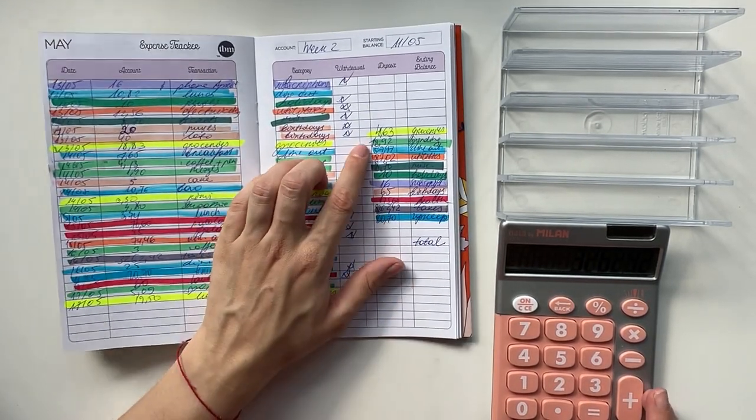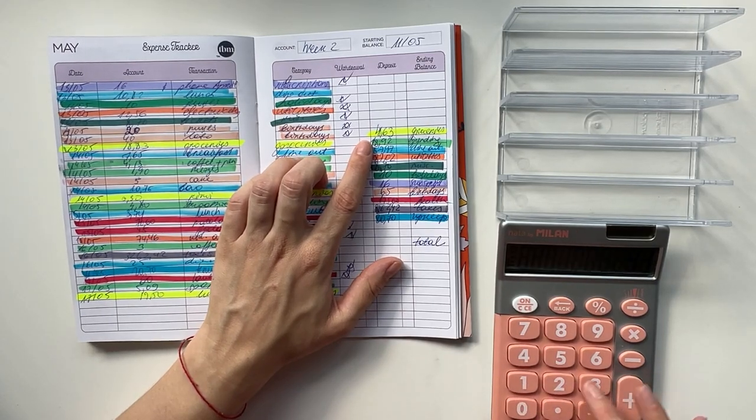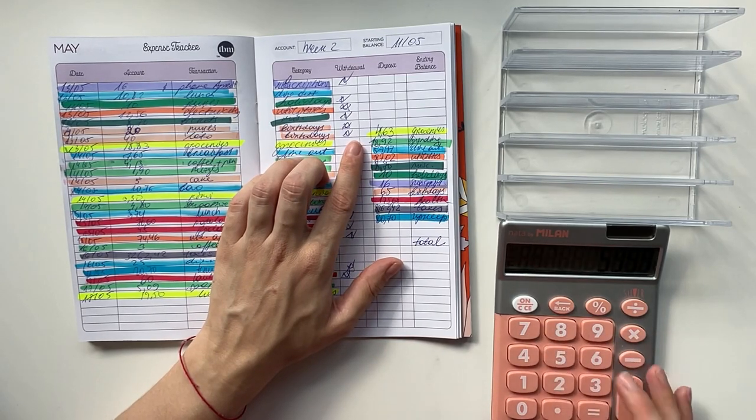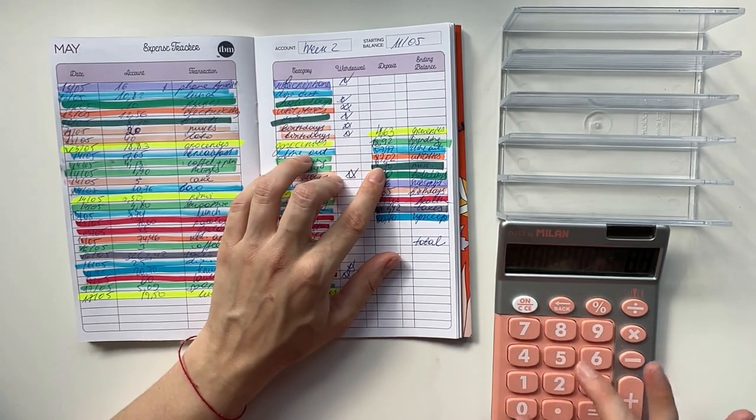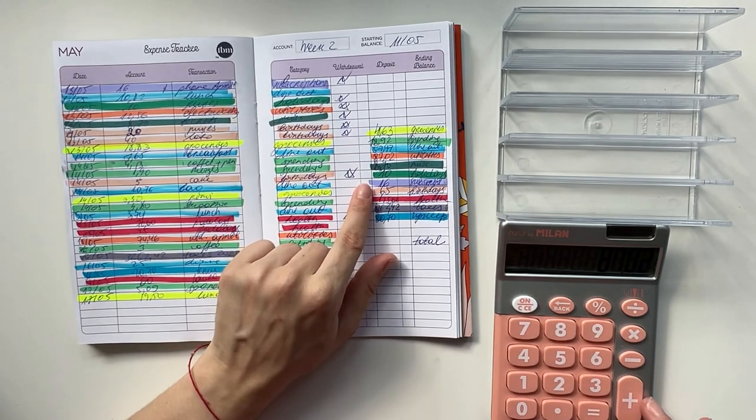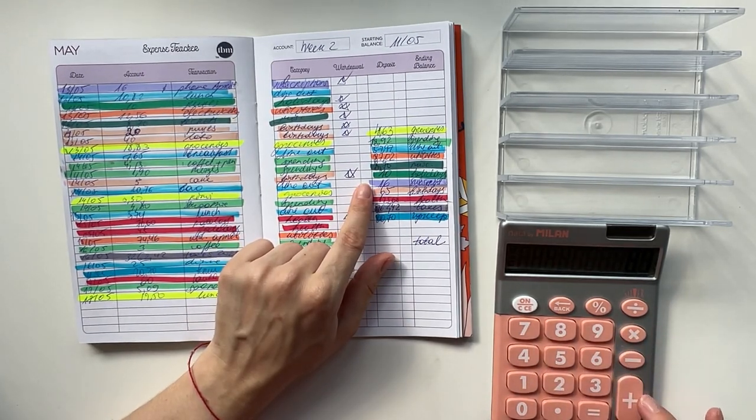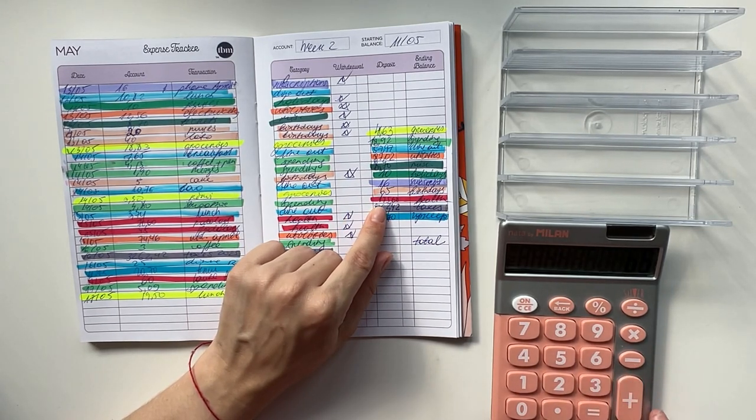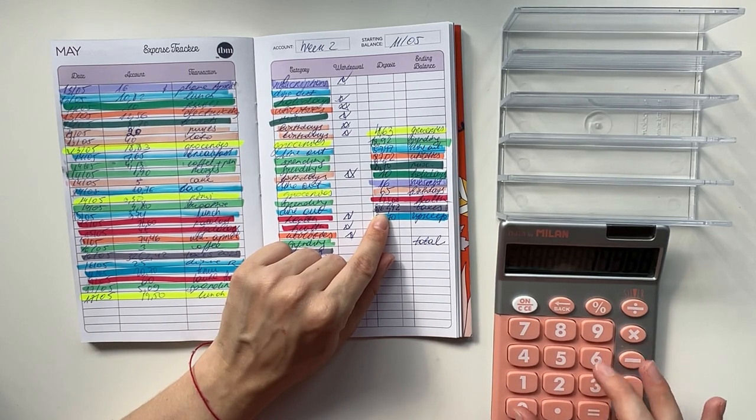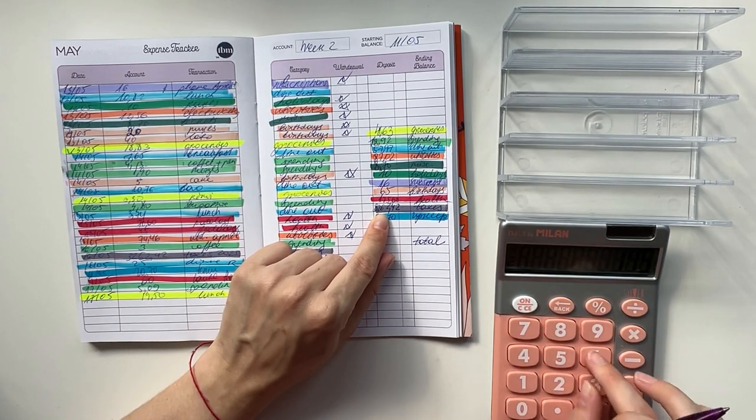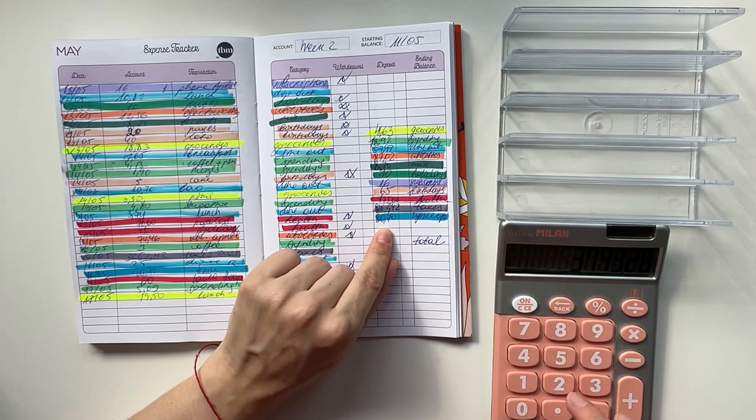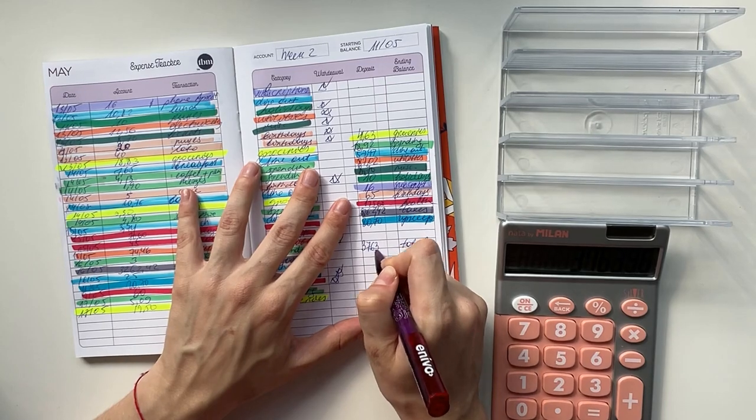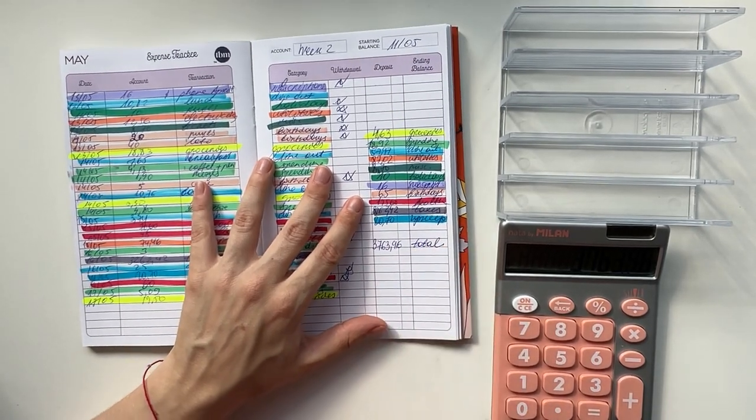Let's quickly calculate all the totals. We did 41.63 for groceries, 18.92 in spending, 57.97 in dine out, 87.02 for utilities for April, 870 for miscellaneous, 10 for holidays, 16 for subscriptions, 65 for birthdays, 175 and 60 for health, plus 20.70 for upkeep. In total that was 3,763 euros and 96 cents.